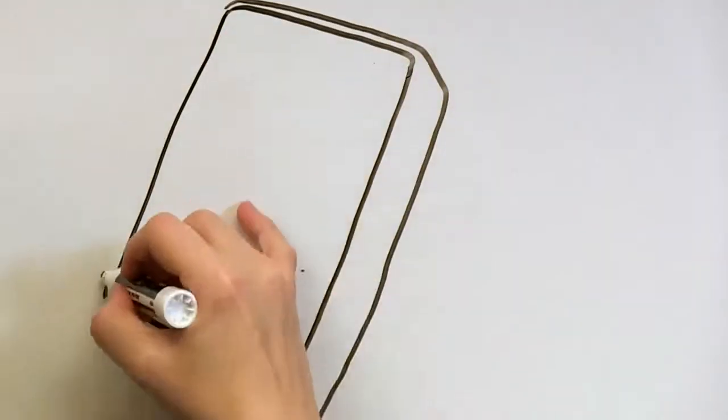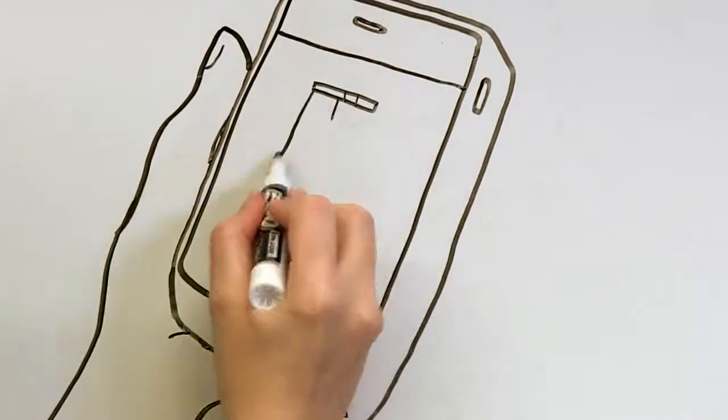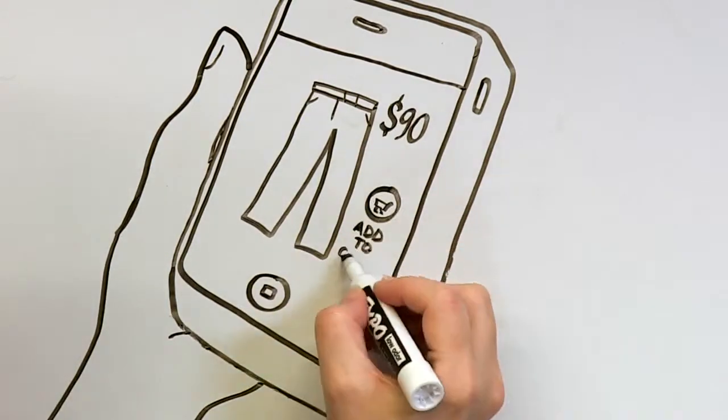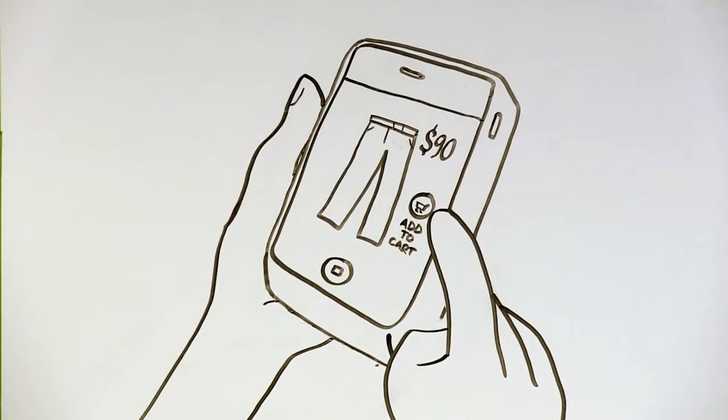With a few taps on her phone screen, Sophie downloads the store app and instantly starts browsing. The sales associate knows exactly what Sophie's looking for before she even walks through the door. Now that's service that Sophie could get used to.